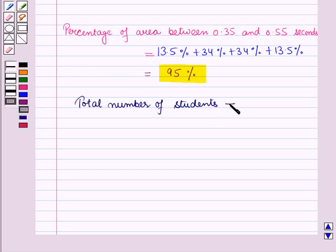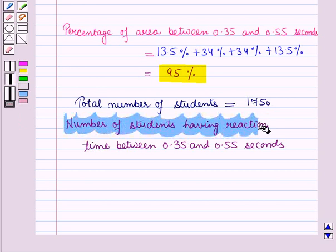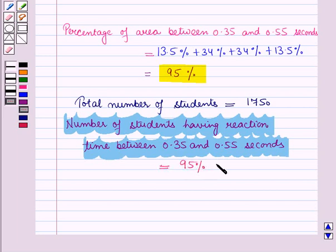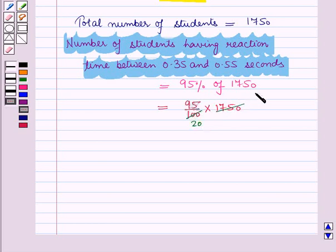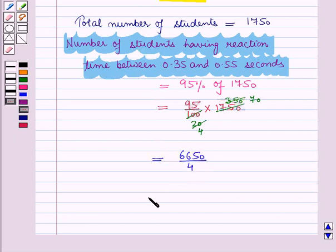The total number of students is 1750. So the number of students having reaction time between 0.35 and 0.55 seconds equals 95% of 1750, which is 95/100 × 1750 = 6650/4, which is approximately equal to 1663 students.